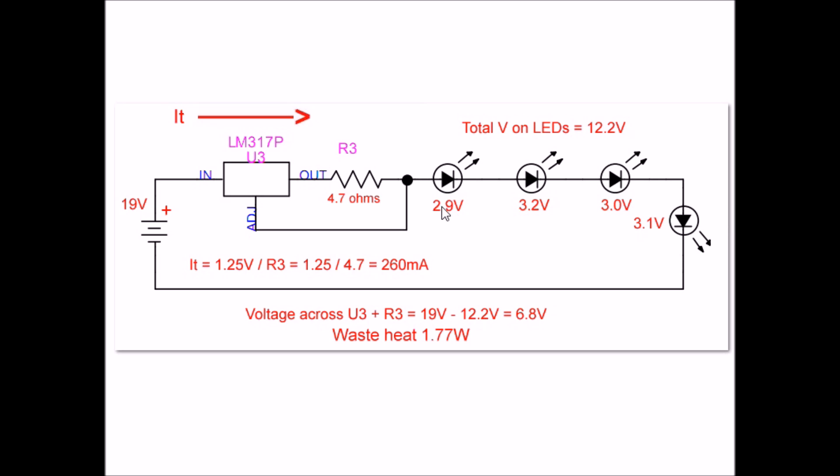Let's look at our total voltage drop with these four LEDs - it's 12.2 volts. If I have a 19 volt input, that means the voltage drop across U3 (the LM317) and R3 is going to come out to 6.8 volts. So 12.2 plus 6.8 equals back to the source voltage of 19 volts.